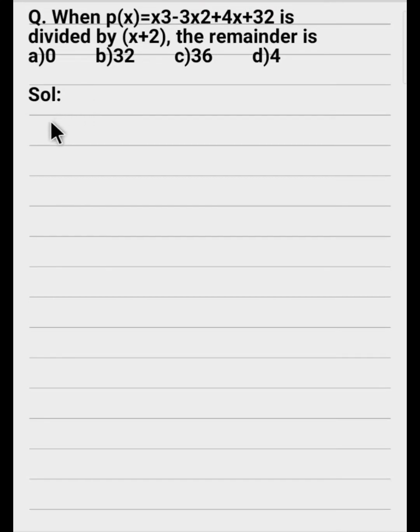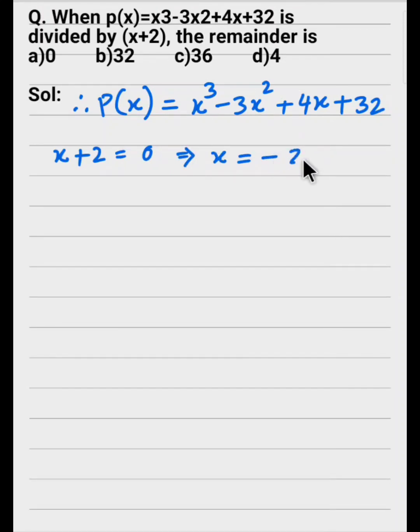Let's write this. p(x) is equal to x³ minus 3x² plus 4x plus 32. Now, we have to do that x plus 2 equals 0, so the value is minus 2. We have to transfer this value.